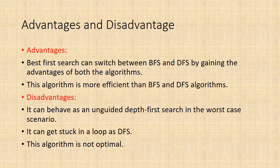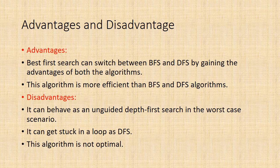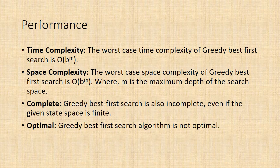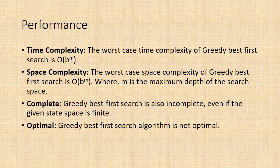Advantages are the best-first search can switch between BFS and DFS by gaining the advantages of both the algorithms. This algorithm is more efficient than BFS and DFS algorithms. Along with the advantages, there are some disadvantages also. It can behave as an unguided depth-first search in the worst case scenario. It can get stuck in a loop as DFS. This algorithm is not optimal. The worst case time complexity of greedy best-first search is O(b^m), where m is the maximum depth of the search space. Greedy best-first search is also incomplete, even if the given state space is finite. The greedy best-first search algorithm is not optimal.